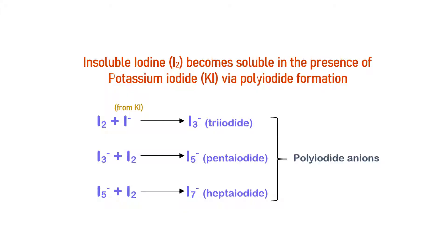So when iodine crystals are added to a solution containing dissolved potassium iodide, the iodide ions I− present in the solution will react with elemental iodine I2 to form the complex triiodide ion I3−.